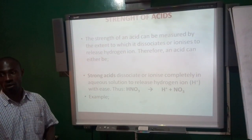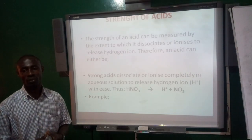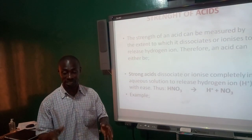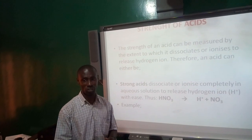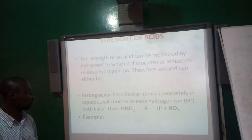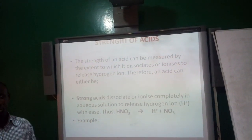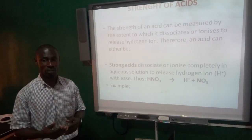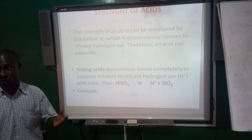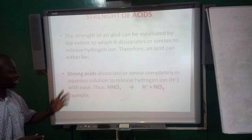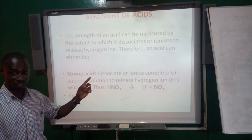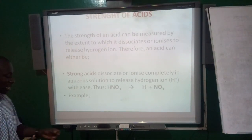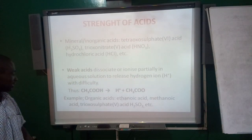We look at the strength of acids. The strength here is looking at the ability of the acid to dissolve — that is, when it dissolves in water, would it release hydrogen ions easily or with some difficulty? Based on that, we have two classifications in terms of the strength of acids. One is that we have strong acids, and the other one will be that of weak acids. Let's look at what a strong acid is.